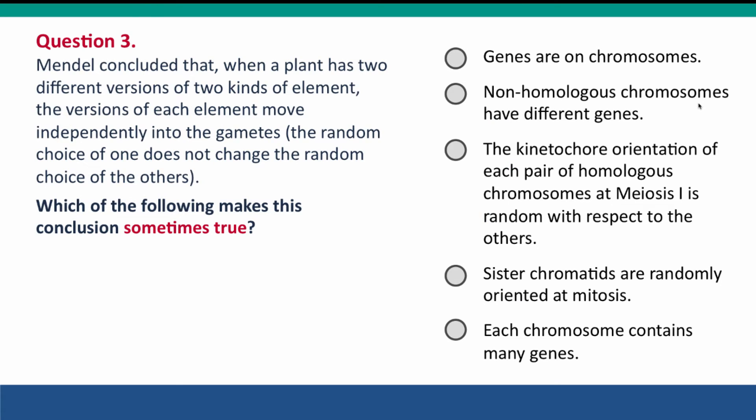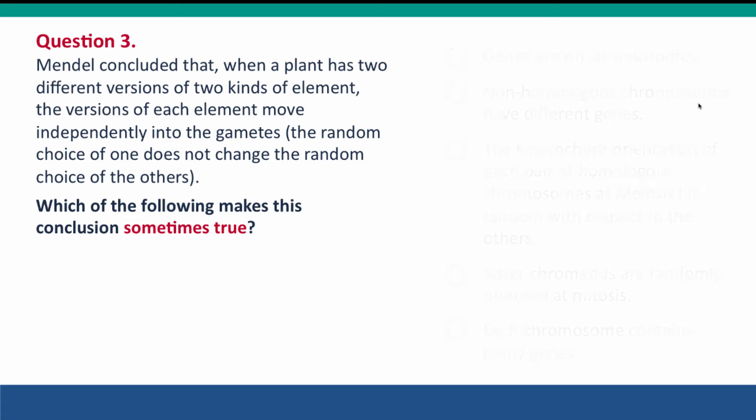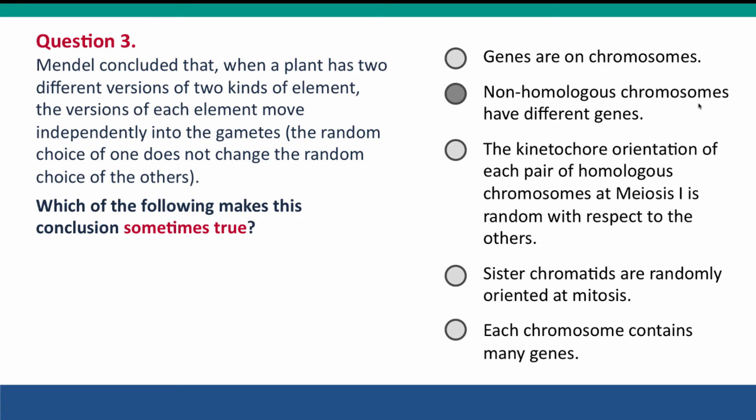The third question: Mendel concluded that when a plant has two different versions of an element, those versions move independently into the gametes. Which statement makes that sometimes — commonly, but not always — true? The answer is that the ability of elements to move independently is caused by their being on different chromosomes.